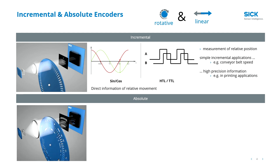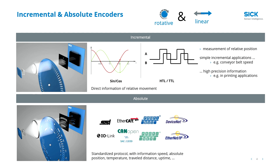Absolute encoders on the other side give you an absolute position information, because every measuring step is defined by a unique code pattern that gives you an absolute position information directly from the start. A PLC receives this information via a standardized protocol. This information can be position, speed, or many more information.